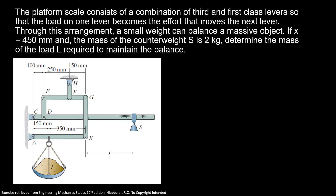The platform scale consists of a combination of third and first class levers, so that the load of one lever becomes the effort that moves to the next lever. Through this arrangement, a small weight can balance a massive object. If x is equal to 4,450 millimeters, and the mass of the counterweight S is 2 kilograms, determine the mass of the load required to maintain the balance.